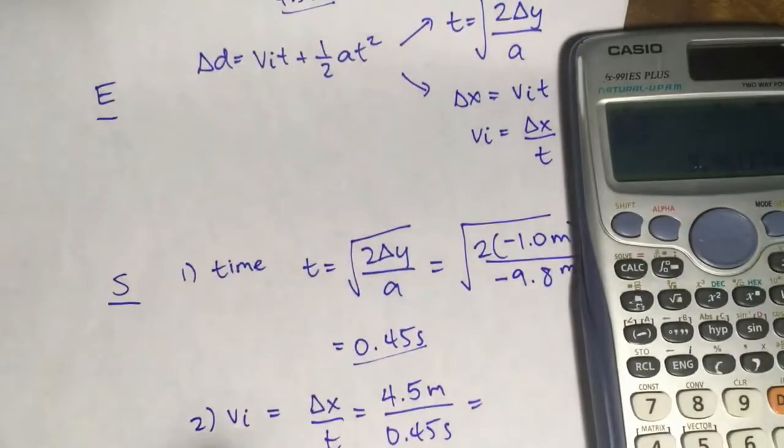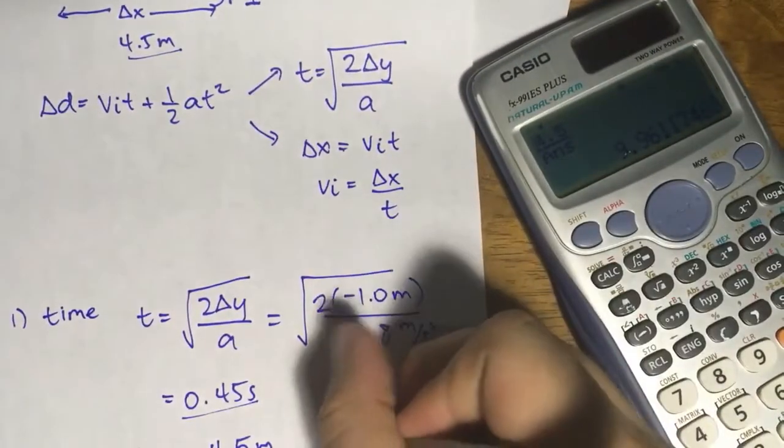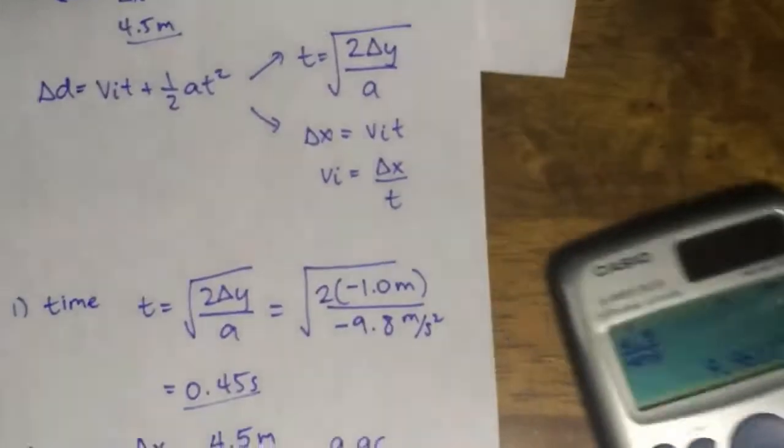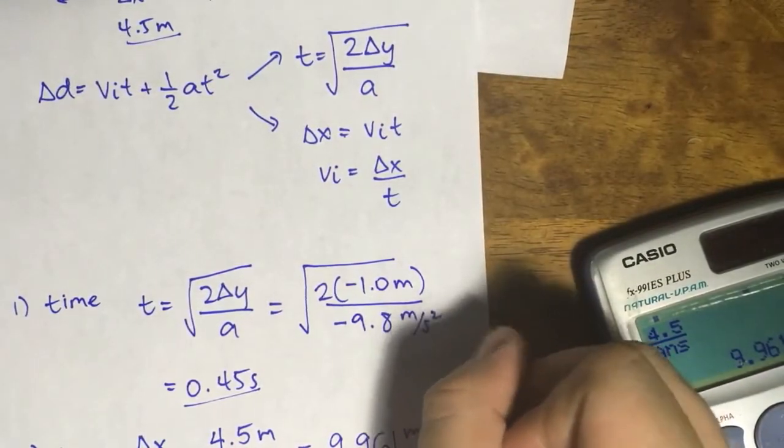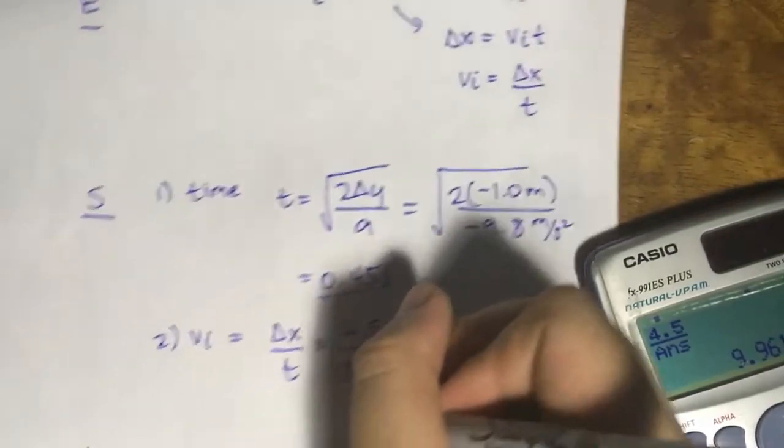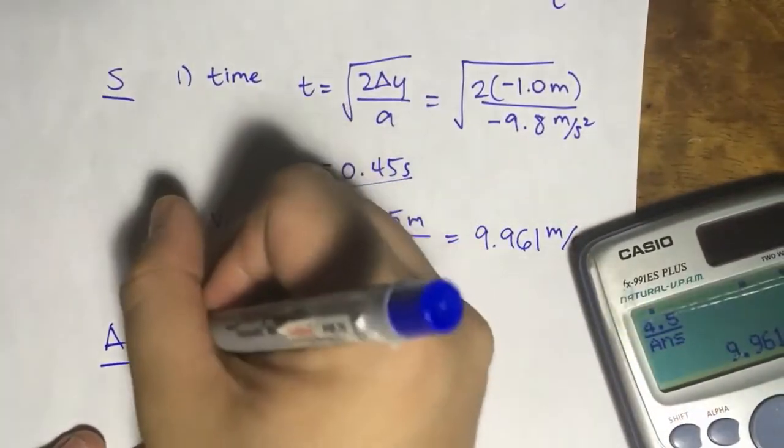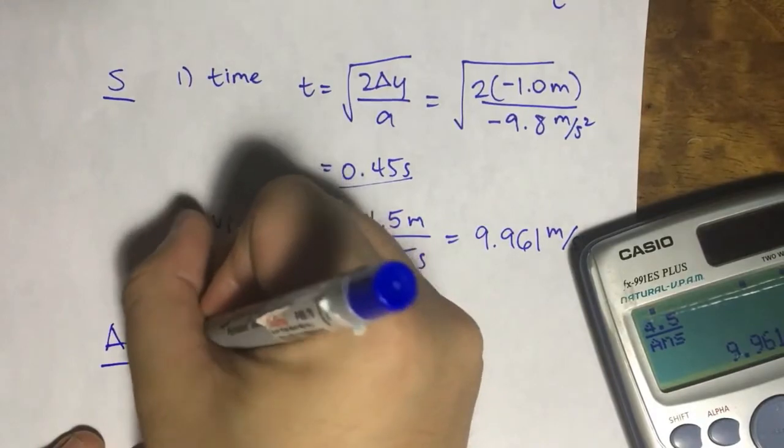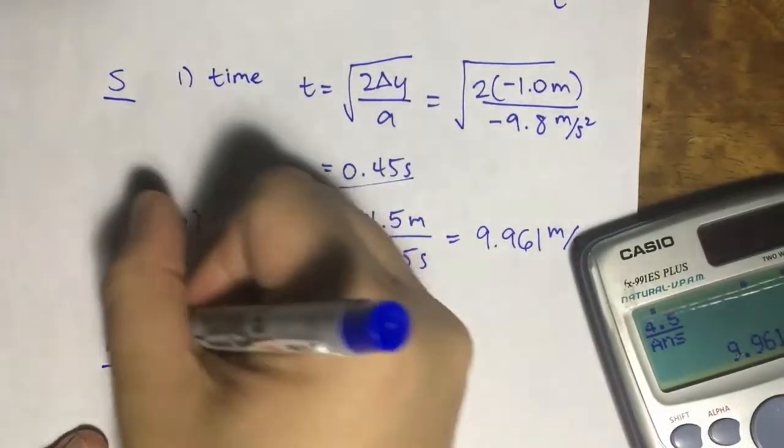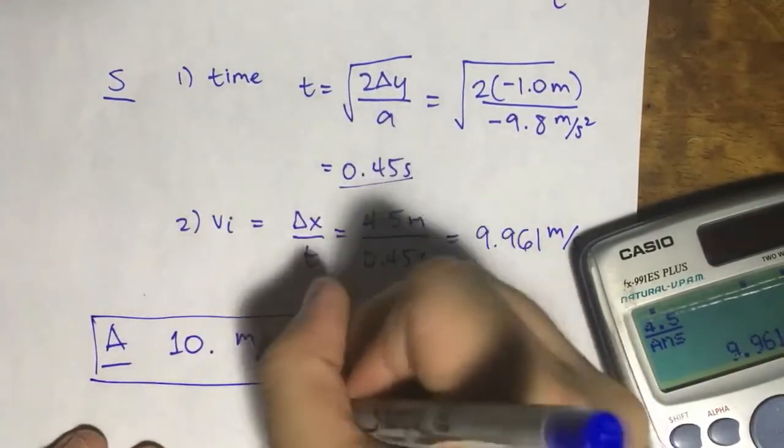We will divide 4.5 by the answer we just got to get the value of 9.96. So it's around 9.961 meters per second. And if we round it up, the final answer would be 2 sig figs. So, 10 meters per second. That's how we solve for this problem.